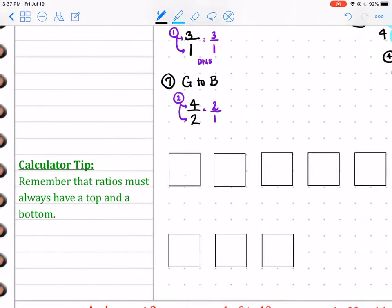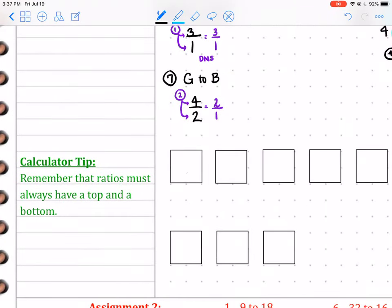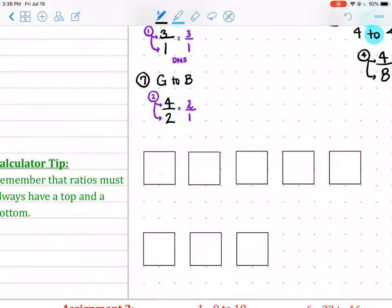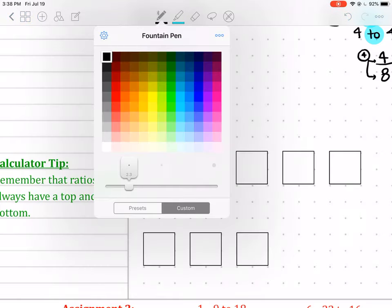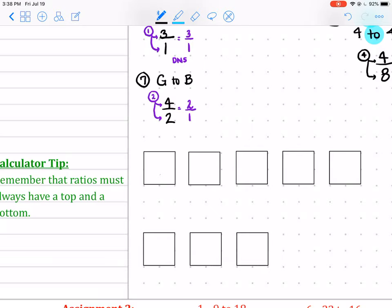And here, I've done calculator tips in green if you have the work text. I just reminded you that ratios must always have a top and a bottom. So the ratio that I want to simplify, I'll give you in just a minute. But first, let me give you the calculator steps so you know what you need to do. The first thing that you always need to do is press the red all clear. So that's just going to clear out the calculator.